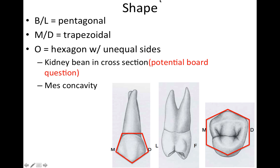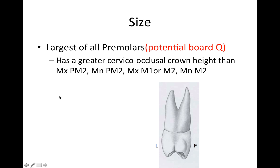Shape: from the buccal-lingual it's a pentagon; from the mesial-distal it's a trapezoid; and from the occlusal it's a hexagon with unequal sides. From the occlusal it looks kind of like a kidney bean, and you'll see questions asking about how in cross section it looks like a kidney bean — that's due to the mesial concavity, which we'll see in the next couple of slides.